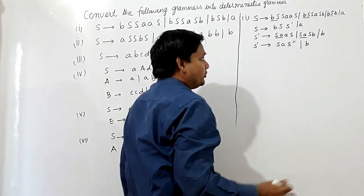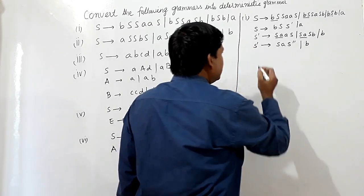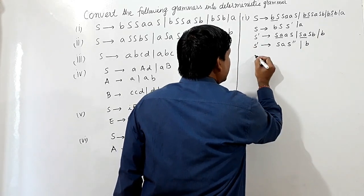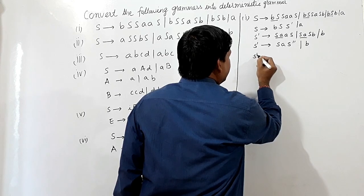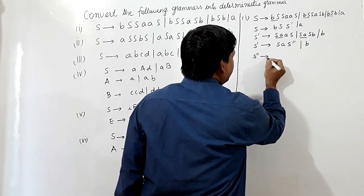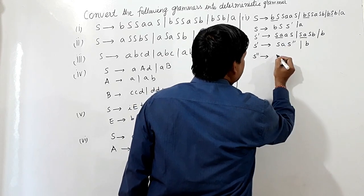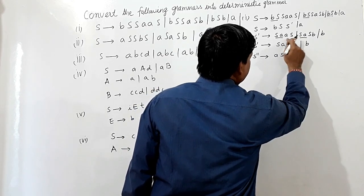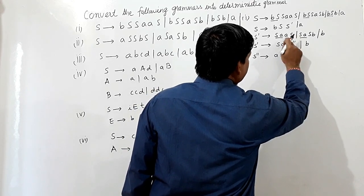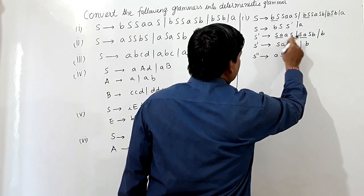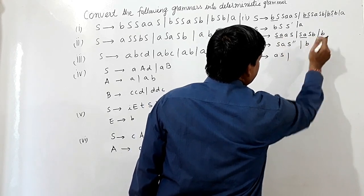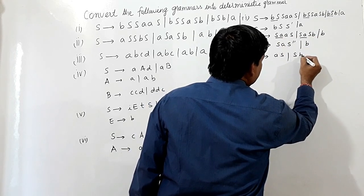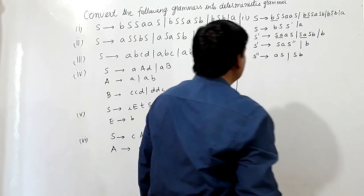Nothing is common here, so I am writing B as it is. Now S-double-dash can be replaced: AS is remaining in this part, and here SB is remaining, so I am writing SB here.